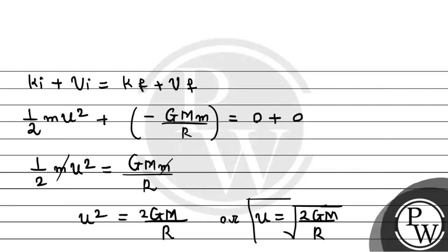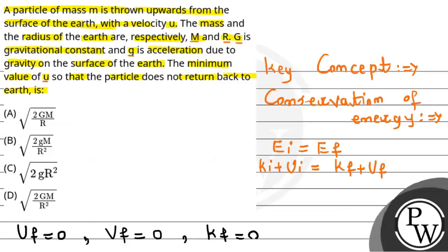And if you see that, this is nothing but the escape velocity. So this is the required answer. Let's check it out, the given option, u equals to square root of 2GM by R, and the option is correct. So this is the required solution, I hope you understand. Best of luck, thank you.